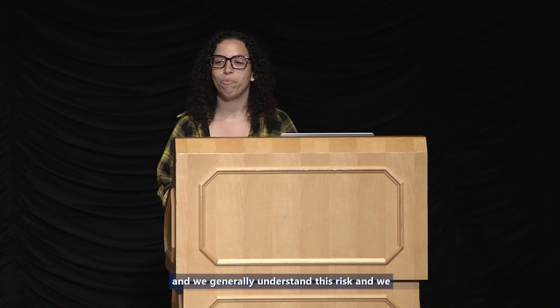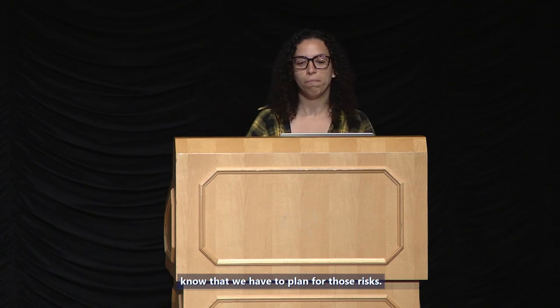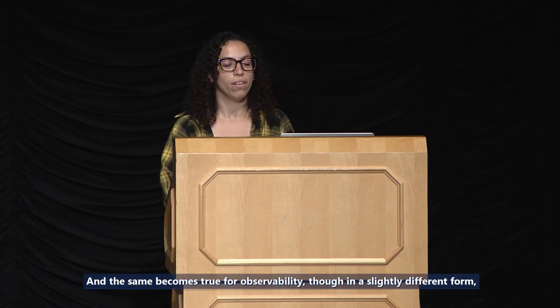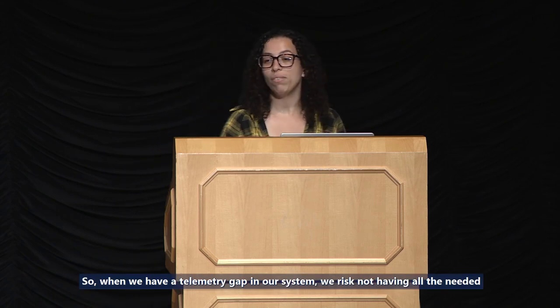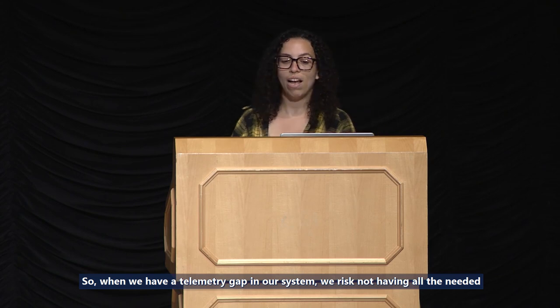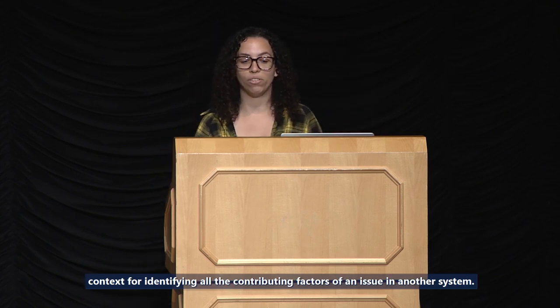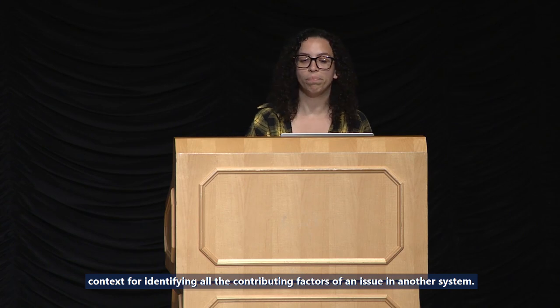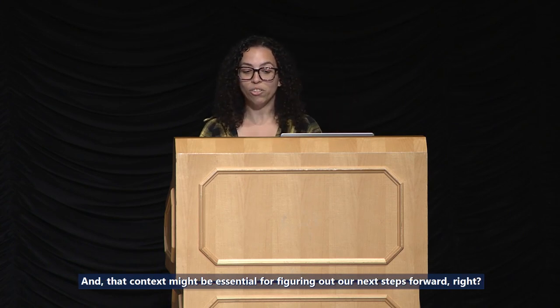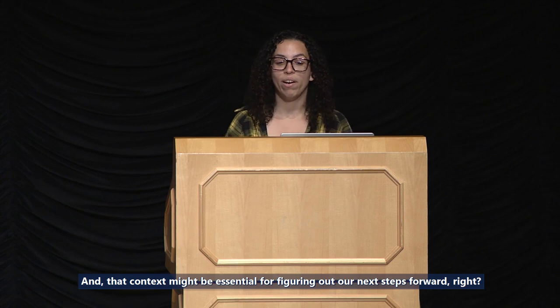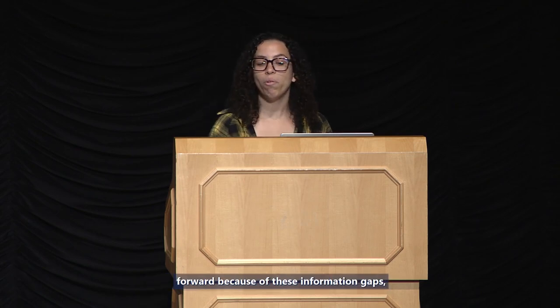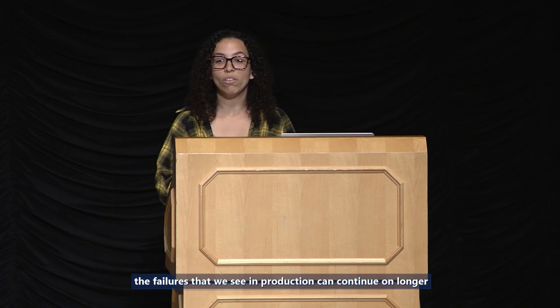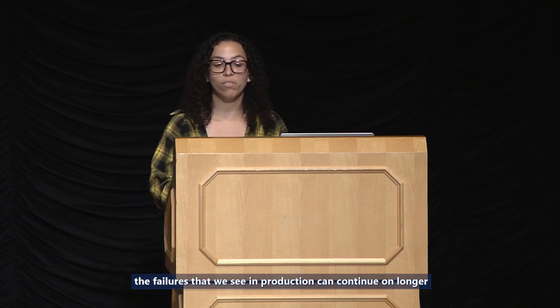We generally understand this risk and know we have to plan for it. The same becomes true for observability, though in a slightly different form: information gaps. When we have a telemetry gap in our system, we risk not having all the needed context for identifying all the contributing factors of an issue in another system. As we have more of these information gaps, this risk only increases.